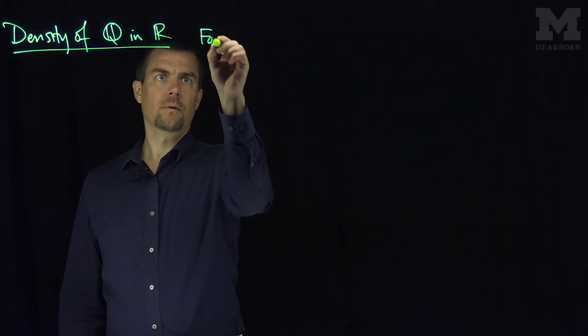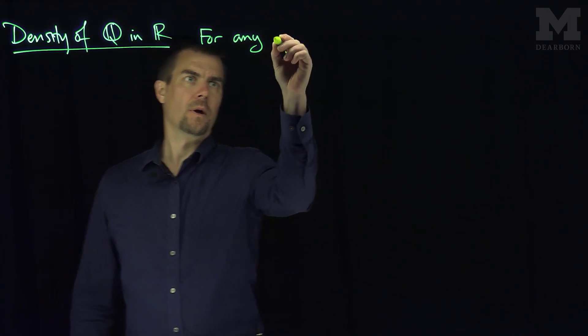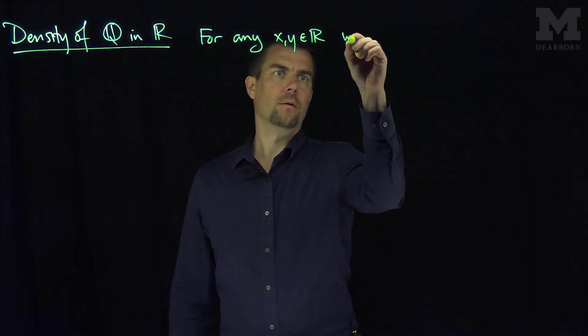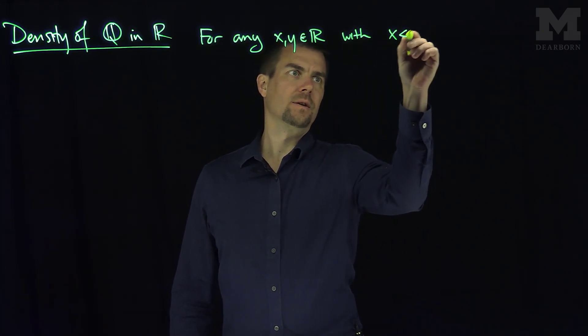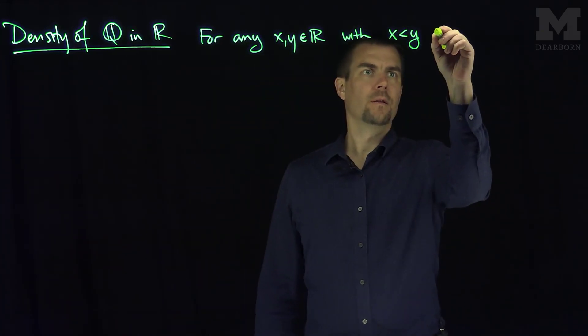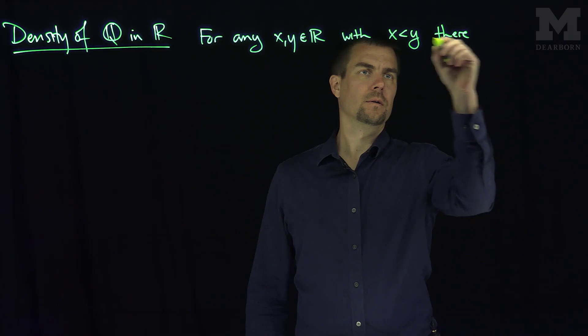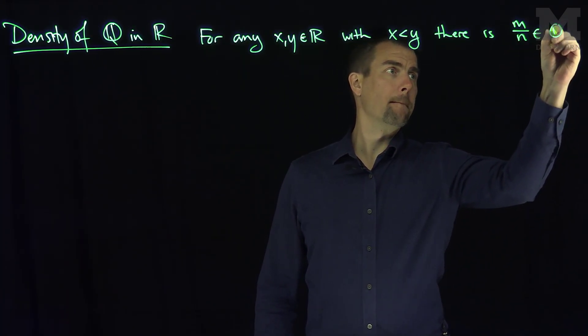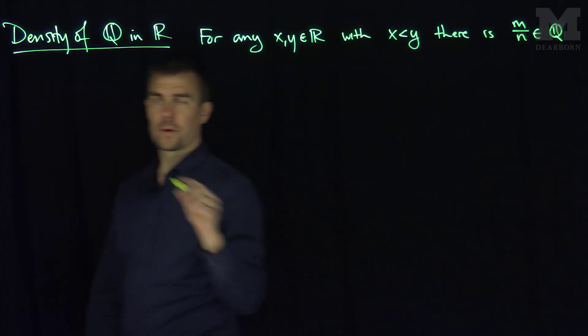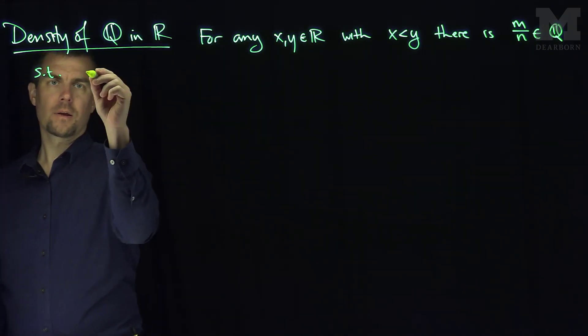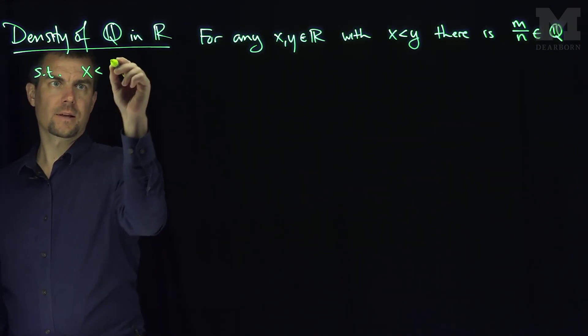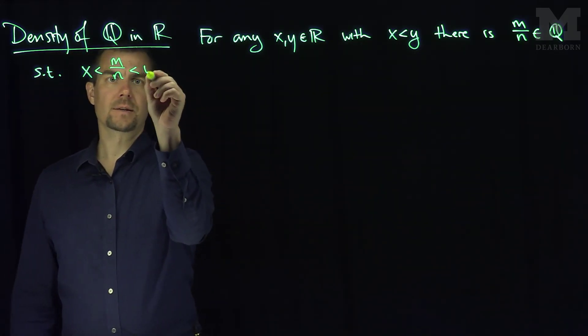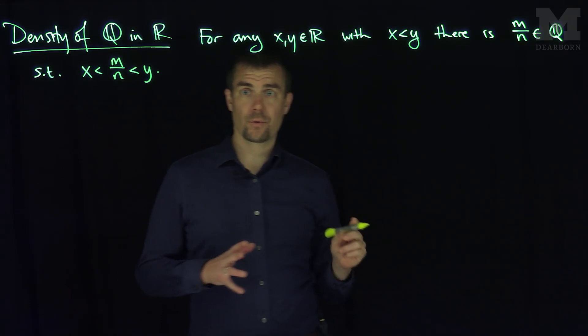I mean for any x, y in R with x less than y, there is m over n in Q, a rational number such that x is less than m over n, and that is less than y. So there's a rational number stuck between two real numbers.